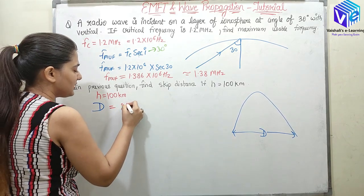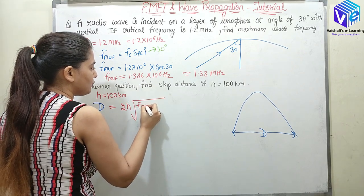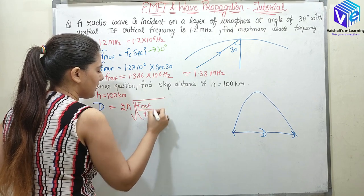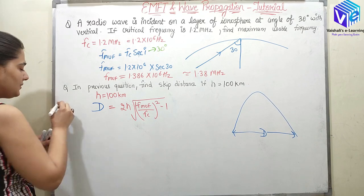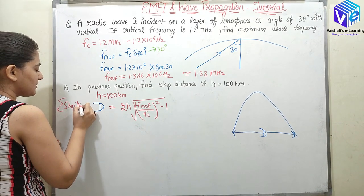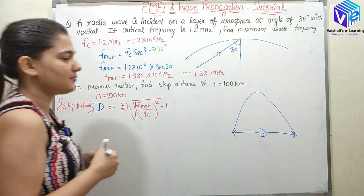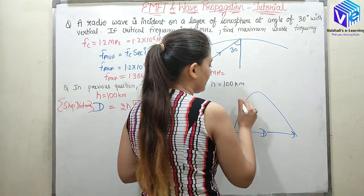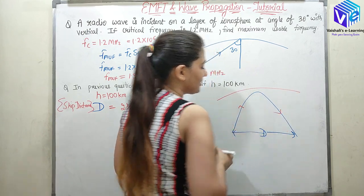I hope you remember its relationship with Fmuf and Fc as well as the height. So skip distance was related as 2H√[(Fmuf/Fc)² - 1]. This is the relationship for skip distance. D is representing my skip distance. I hope you understood what is actually the skip distance. My wave is going in the space and it is coming back after the reflection.